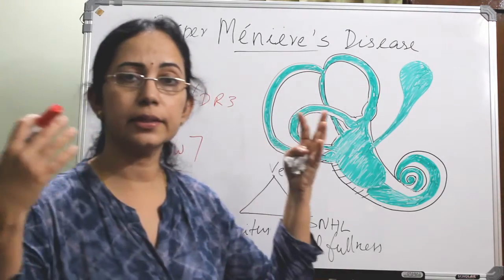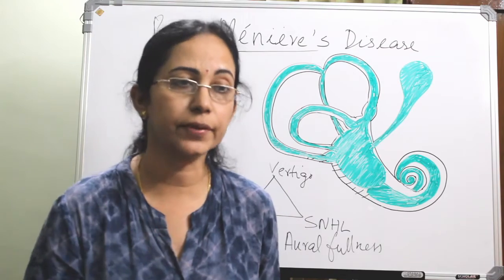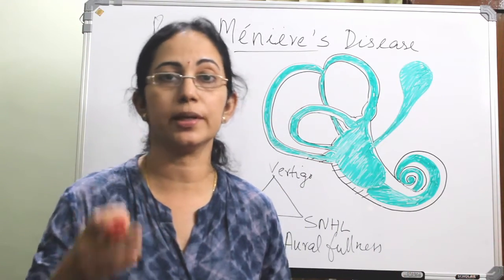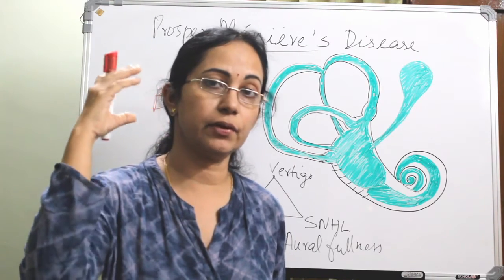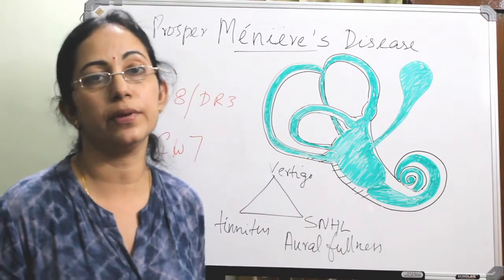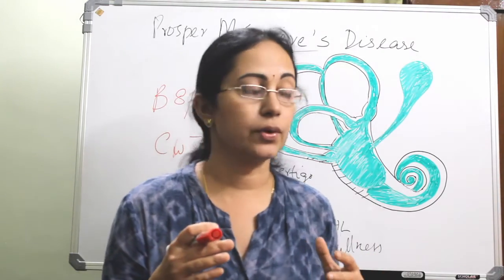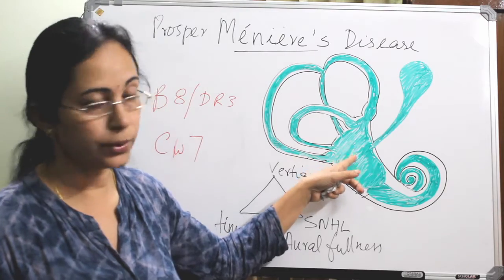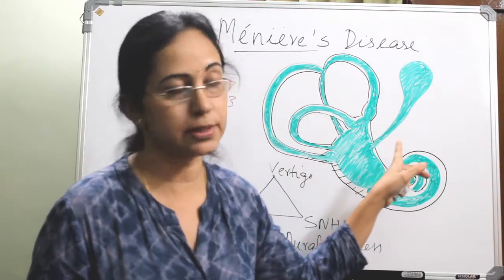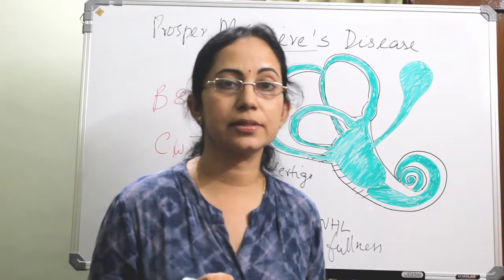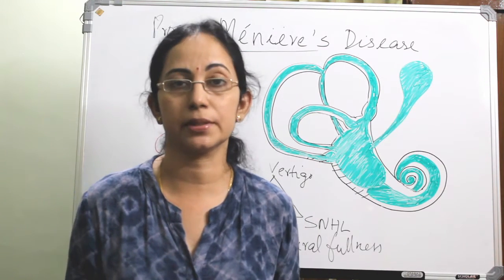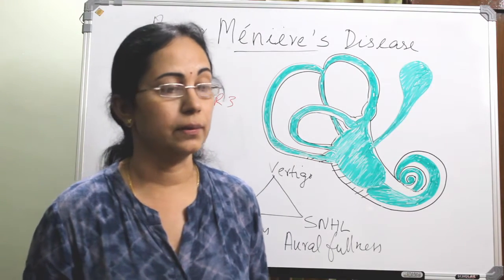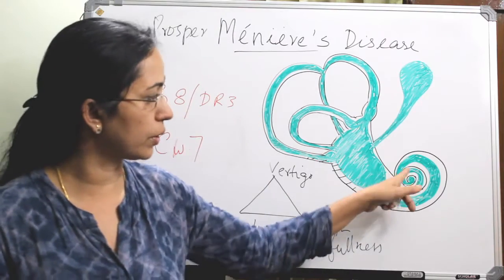The pathogenesis involves either overproduction or defective absorption of endolymph, causing it to accumulate. In the acute stage, it typically starts with the cochlea, then the saccule, utricle, and semicircular canals, with the last effect on the endolymphatic duct and sac. At one stage, the membranous labyrinth ruptures, and the endolymph — which is high in potassium — causes depolarization of neurons of both the vestibular and cochlear systems.